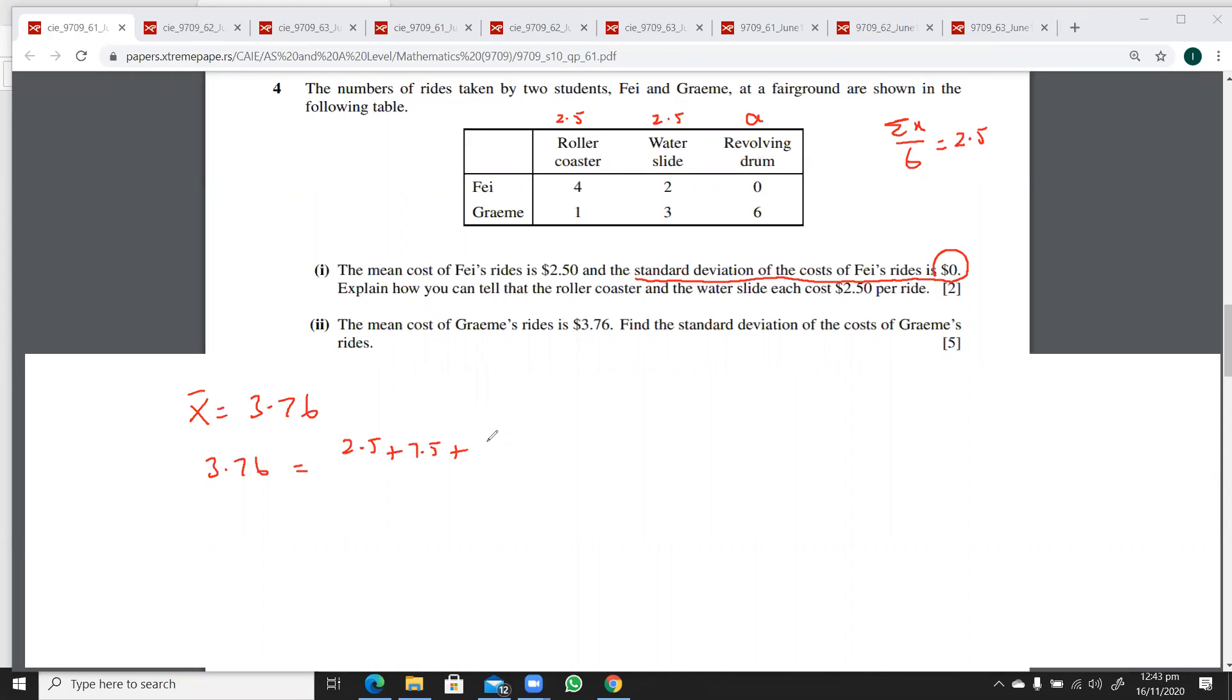This is going to be $3.76, which equals 1 times $2.50 plus 3 times $2.50 plus 6 times α, divided by 10 rides. So $37.60 equals 10 plus 6α, which means 6α is $27.60. So α is $4.60.